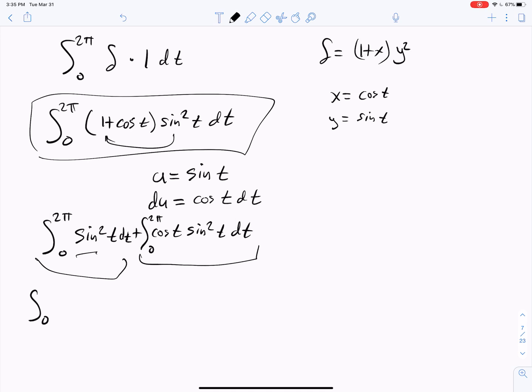So let's take these in each step. The first one will have integral of 0 to 2π. For the half-angle, we'll have (1 - cos 2t)/2 dt. The other one will become the integral of u² du, and that's going to be taken from sine of 0 is 0 and sine of 2π is 0, so from 0 to 0 of u² du.